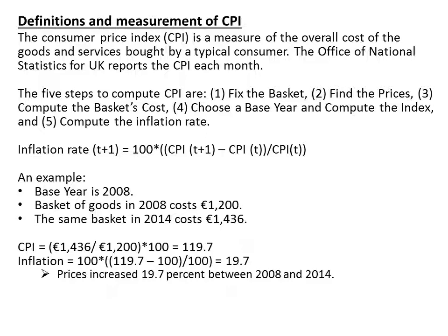We will get the cost of the basket for many years. Then we choose one of these years as the base year, and we can compute the index — the CPI. Once we have the CPI for every year, we compute the inflation rate. The CPI for the base year is 100, and other years take different values. The inflation rate in period T+1 equals CPI(T+1) minus CPI(T), divided by CPI(T), multiplied by 100.